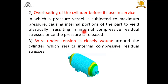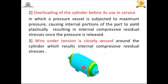The second method is overloading the cylinder before it is used in service. In this method, the pressure vessel is subjected to maximum pressure, causing the internal parts to yield plastically. Once the pressure is relieved, internal compressive residual stresses remain. The third method is wire winding under tension, where wire under tension is closely wound around the cylinder, and because of this, internal compressive residual stresses are induced.